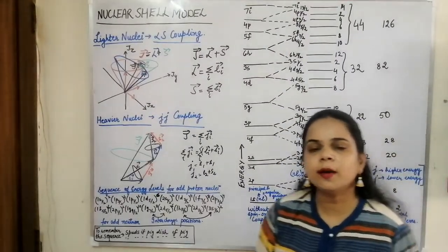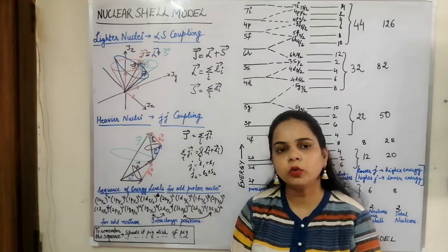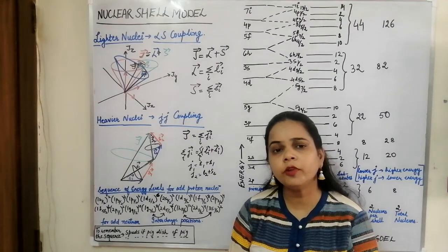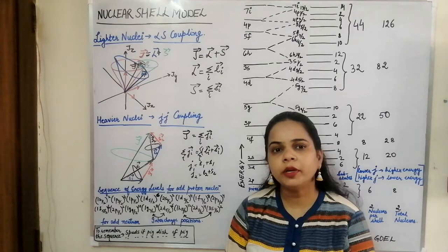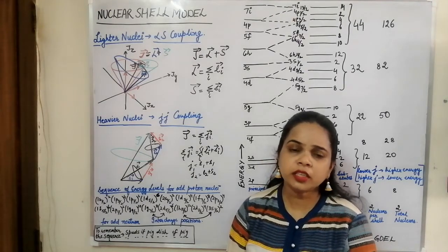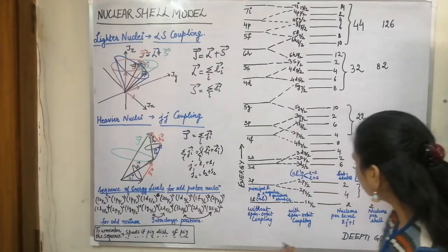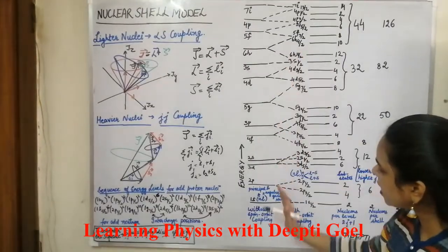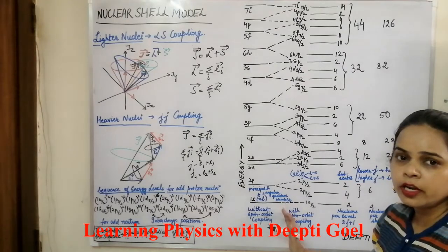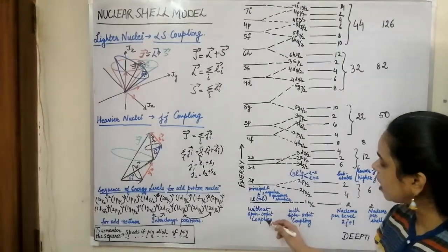In this way, heavier nuclei follow JJ coupling and lighter nuclei follow LS coupling. We must consider the effect of spin-orbit coupling to determine the energy levels of the nucleons. For electrons, the spin-orbit interaction was not taken into account, but for nucleon filling we must include the effect of orbital and spin interactions. This gives us the energy level diagram for filling nucleons.